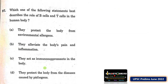Which one of the following statements best describes the role of B cells and T cells in the human body? Options: A — they protect the body from environmental allergens; B — they alleviate the body's pain and inflammation; C — they act as immunosuppressants in the body; D — they protect the body from diseases caused by pathogens.